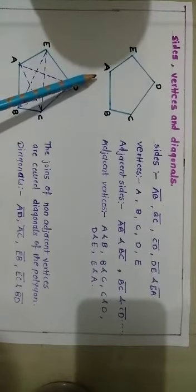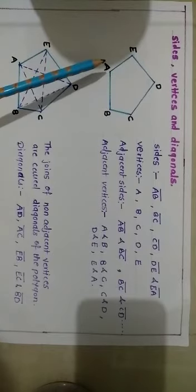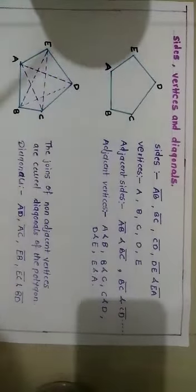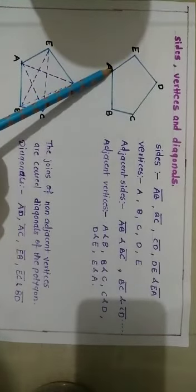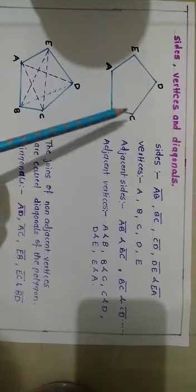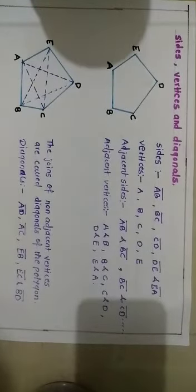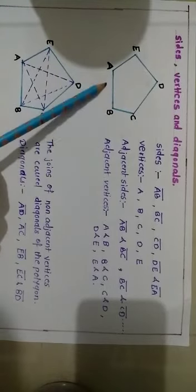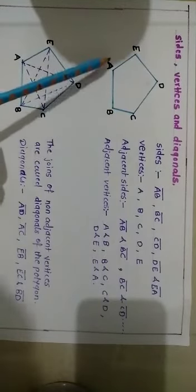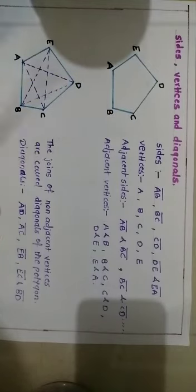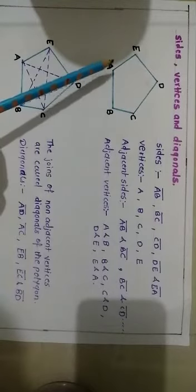Now let us understand the sides, vertices, and diagonals of a polygon. Here I have drawn one polygon made up of five line segments, shown with points A, B, C, D, and E. The line segments forming a polygon are called its sides, so in this figure AB, BC, CD, DE, and EA are the sides. A vertex is the common point where two sides meet. For example, point B is the common point where sides AB and BC meet, so B is called a vertex. This figure has five vertices: A, B, C, D, and E.